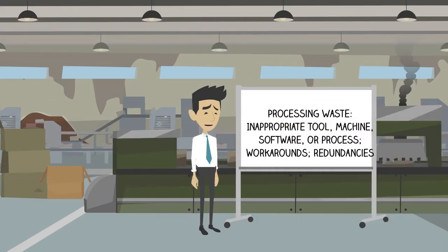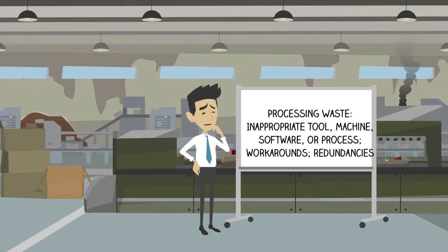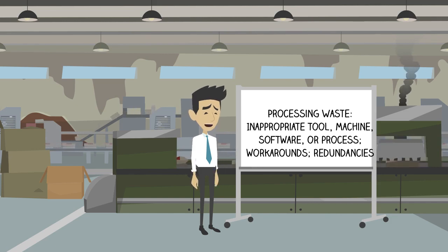Inappropriate processing waste is waste within the actual manufacturing or administrative or business process itself. Examples include reworking or touching up products at the end of a process instead of getting it right the first time, using equipment designed for large batches when we want to produce in small batches or one unit at a time, using workarounds like a mallet to make two parts fit together, and redundant data entry into multiple electronic or paper-based systems.